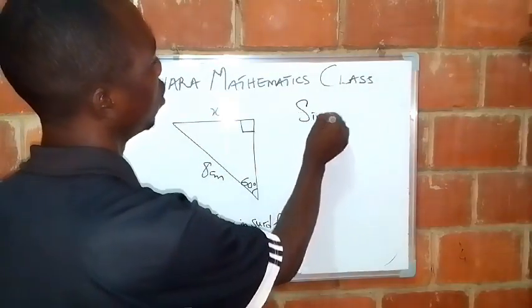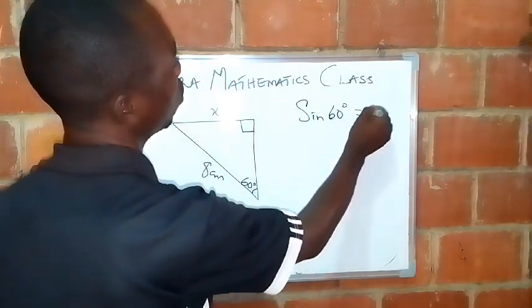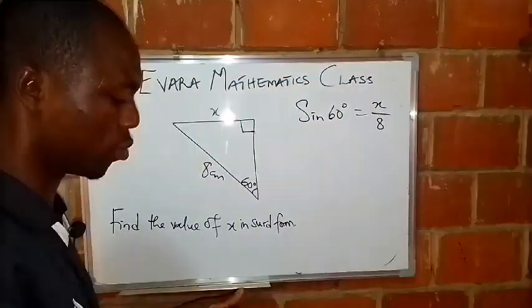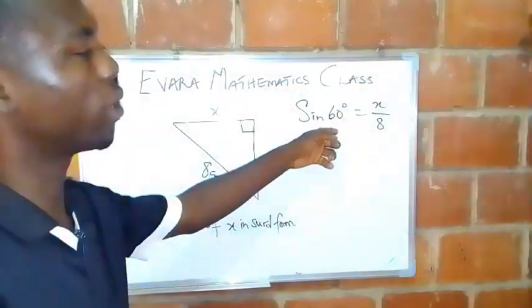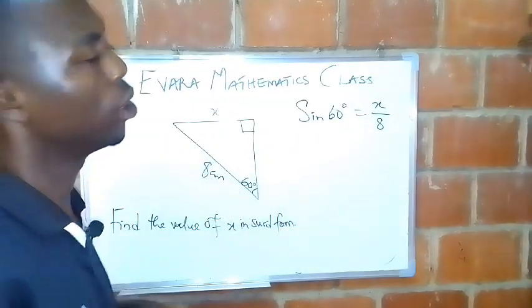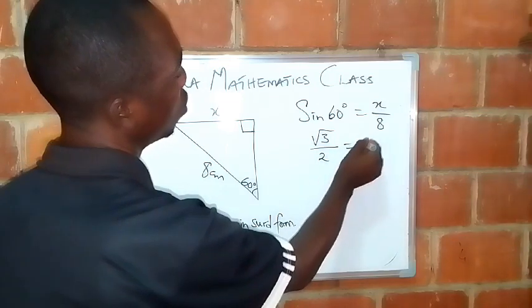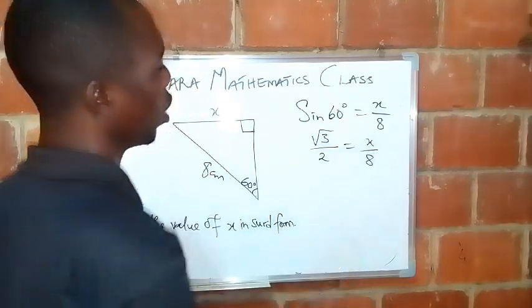So sine 60 degrees equals opposite over hypotenuse. Then you bring in the value of sine 60 in surd form. Sine 60 degrees is root 3 over 2 equals x over 8.